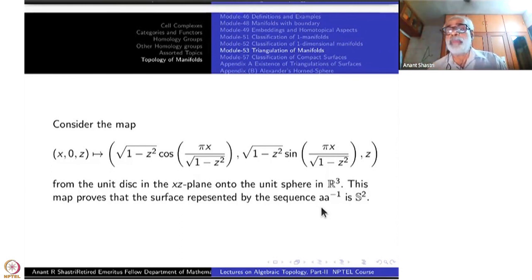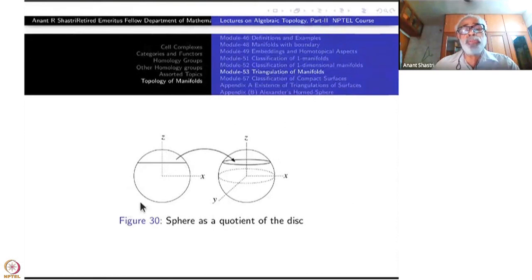This map proves that the surface represented by the sequence A, A inverse, two edges being labeled from bottom to top, like this A, A inverse. What is the space? The quotient space when edge identification is like this. These two edges are being identified like that from a disc. So that is the picture, that is the map I have here. So how does it do? This is your disc, unit disc in the X-Z plane.